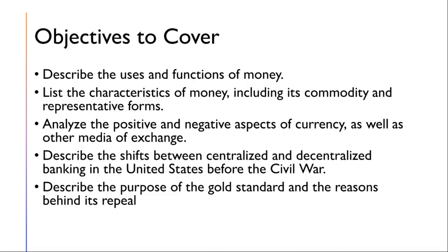On Wednesday, we will move into a historical exploration of the financial landscape of the United States before the Civil War, specifically examining the shift between centralized and decentralized banking systems. In the nascent years of the Republic, decentralized banking marked by the issuance of state-chartered banknotes prevailed. However, inherent instabilities and frequent financial panics led to a paradigm shift towards centralized banking, with the establishment of the first and second banks of the United States. These institutions aimed to provide a more stable financial framework, yet their existence fueled debates over the balance of federal and state powers, as famously debated between Alexander Hamilton and Thomas Jefferson.